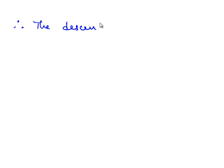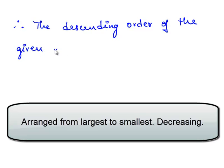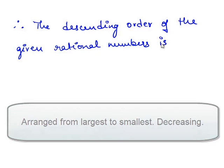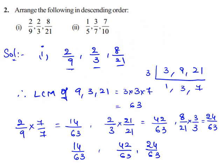Therefore, the descending order of the given rational numbers is 42 by 63, 24 by 63, 14 by 63 — that is, 2 by 3, 8 by 21, and 2 by 9.